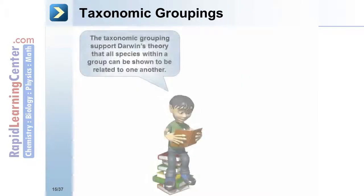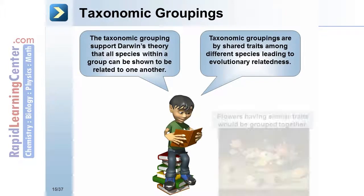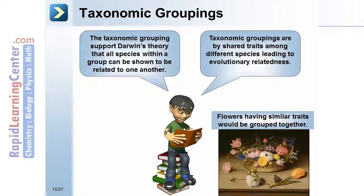The taxonomic groupings support Darwin's theory in that all species within a group can be shown to be related to one another. Taxonomic groupings are based on shared traits among different species, leading to evolutionary relatedness. For example, flowers having similar traits would be grouped together.